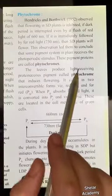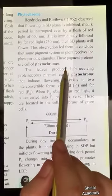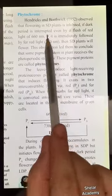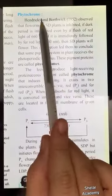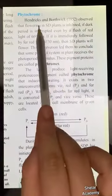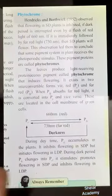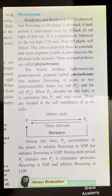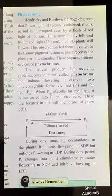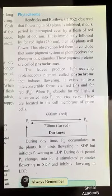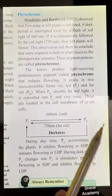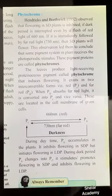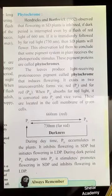Since we have studied the effect of light on flowering, we now look at the phytochrome concept. These are basically photoreceptors in plants, and they are sensitive to red and far-red regions of the visible spectrum of light.